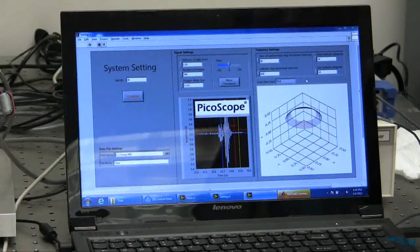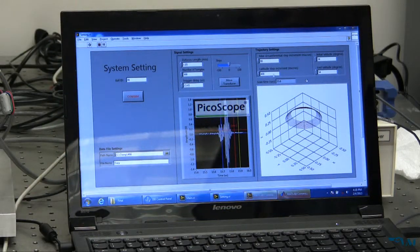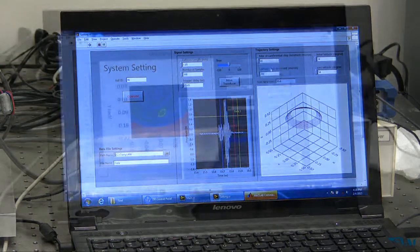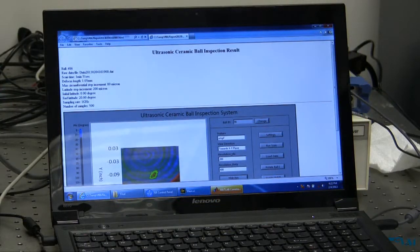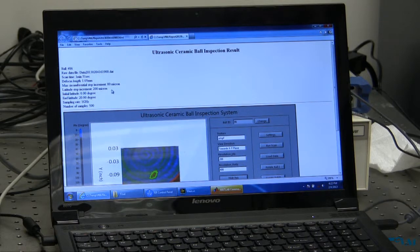A fine scan can be performed to further confirm the crack and estimate its size. Finally, user can click the Generate Report button to generate an HTML format document containing the ball ID, test parameters, and a scanned image. This report is saved along with the data files.